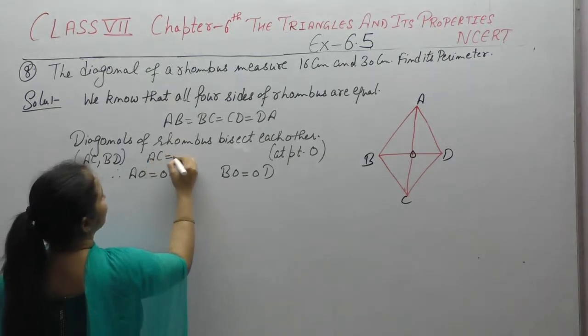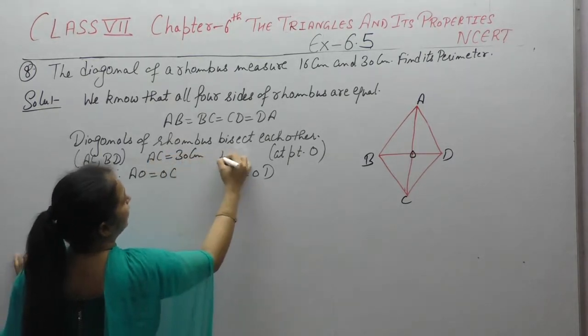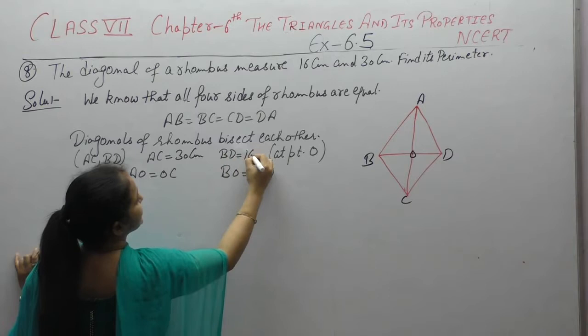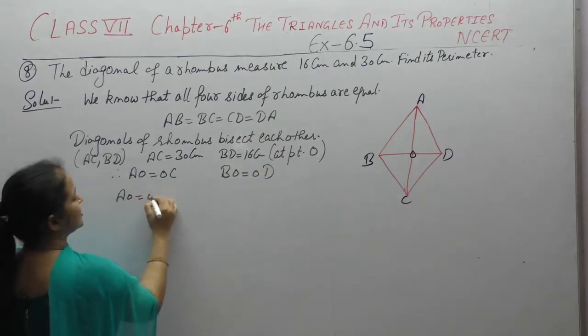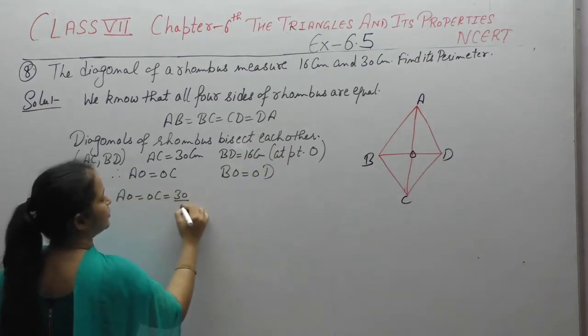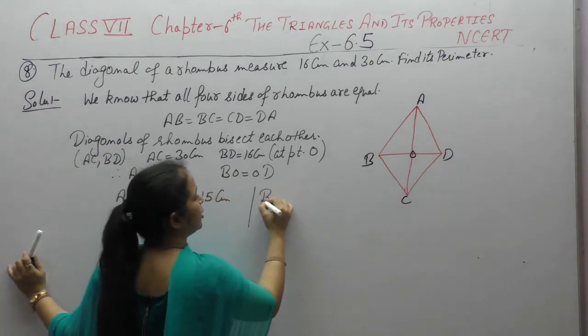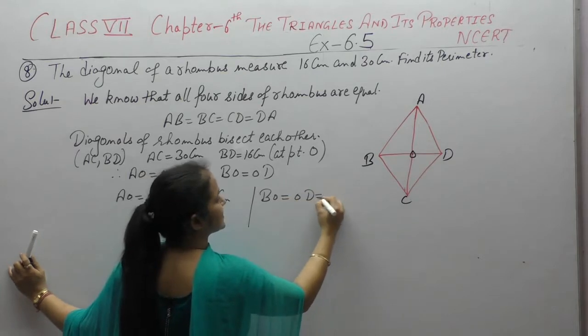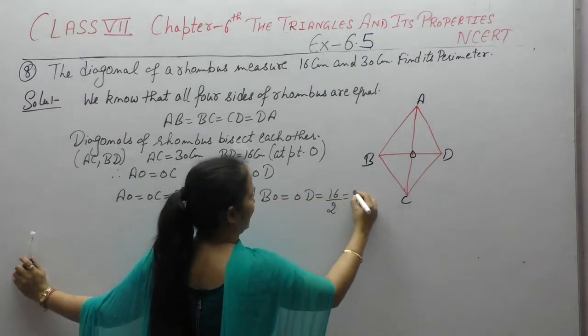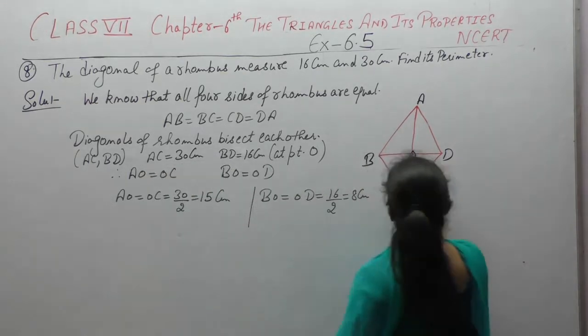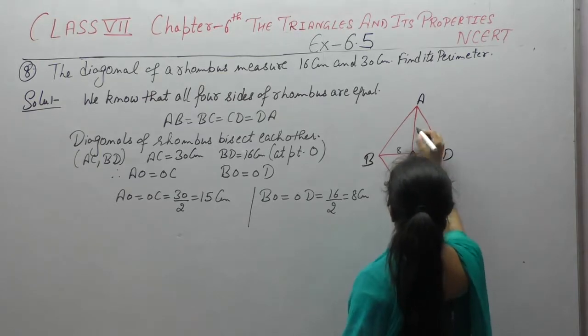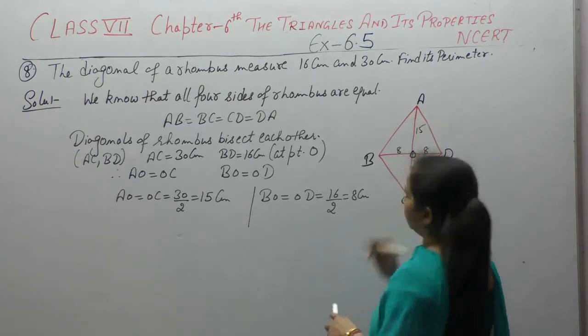It is 30 cm. Or diagonal BD is 16 cm. So AO is equal to OC, 30 by 2, 15. BO is equal to OD, 16 by 2, 8 cm. So this is 8, 8, 15 and 15.